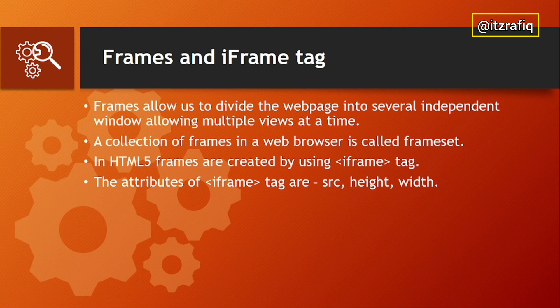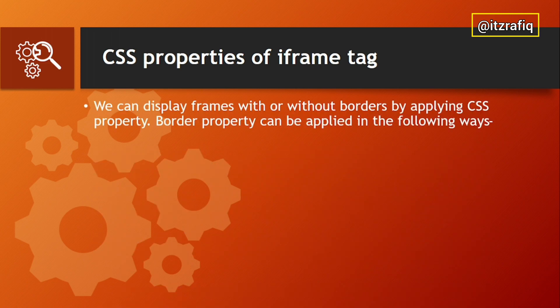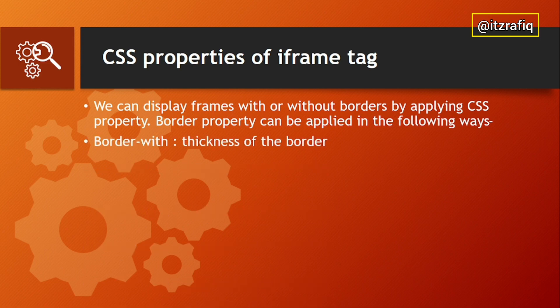In HTML5, we use the iframe tag to create a frame. The attributes of the iframe tag are src, height, and width. The src specifies the source — the page to be displayed. Height specifies the height of the frame and width specifies the width. When we insert a frame, we see a gray-type border, and that border color and style can be customized using CSS.